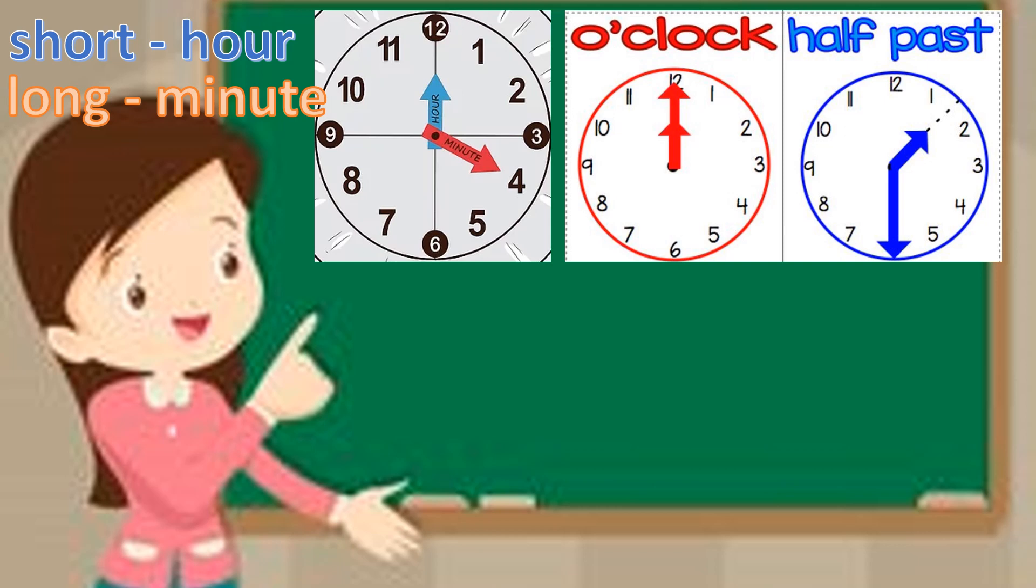So we look what number it passed to tell us. So if we look at the example there. The long hand is on the 6, which tells me it's half past. The short hand is between the 1 and the 2. So it passed the 1. So that will mean it is half past 1.